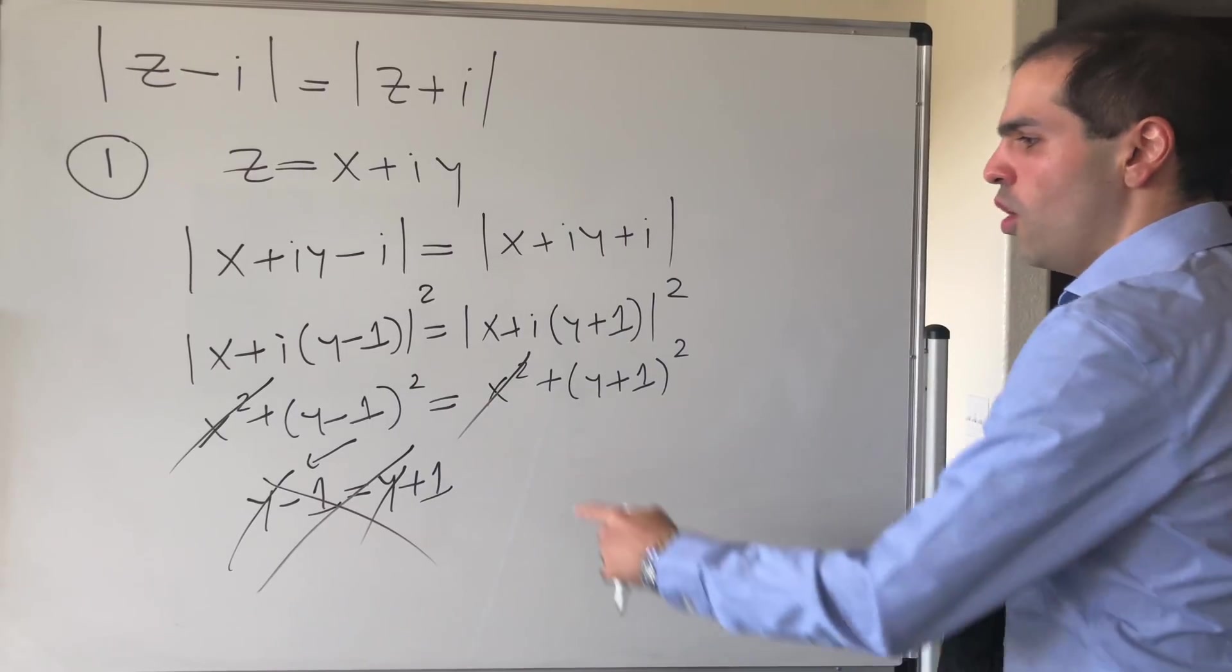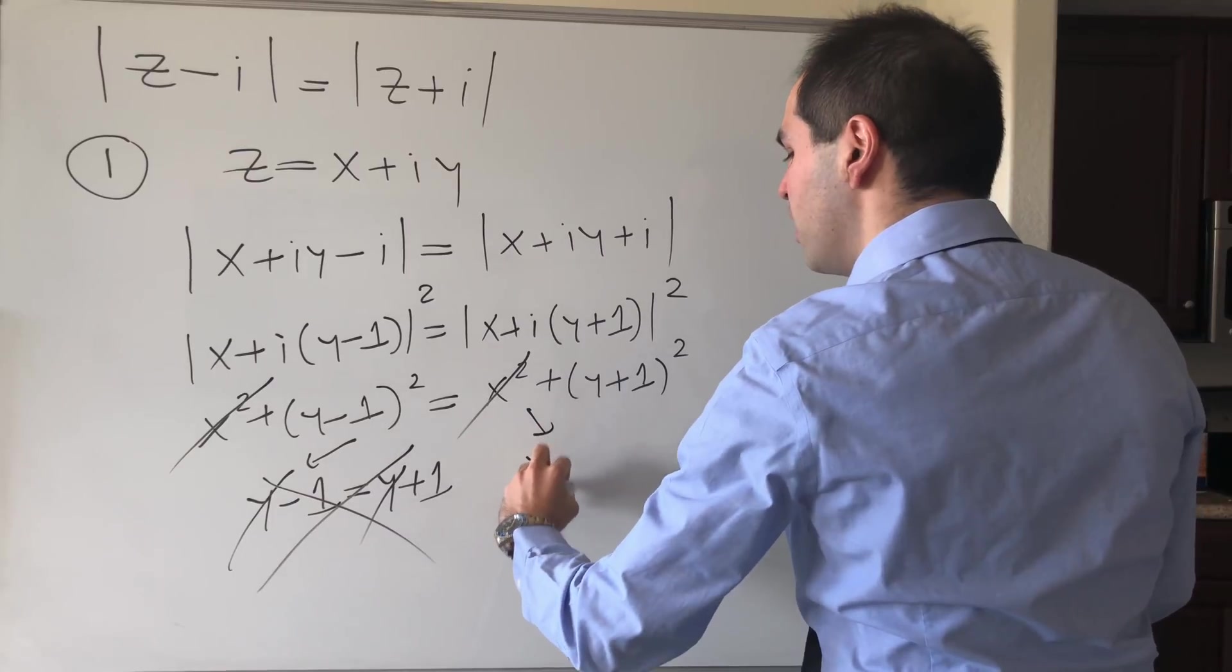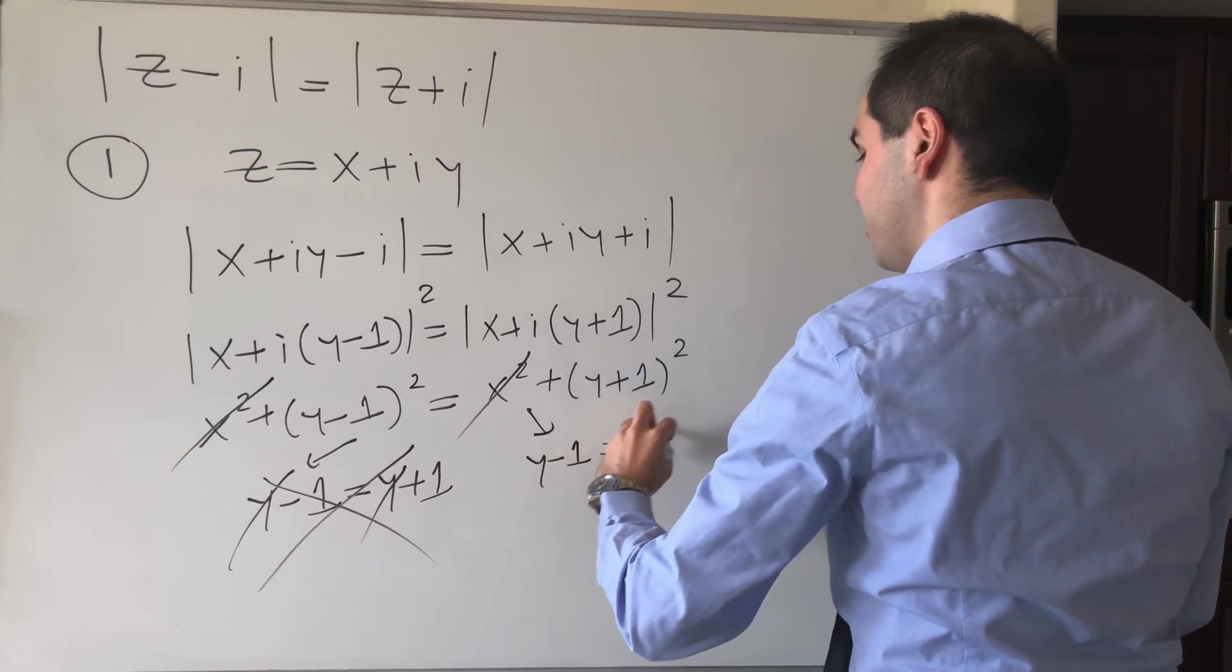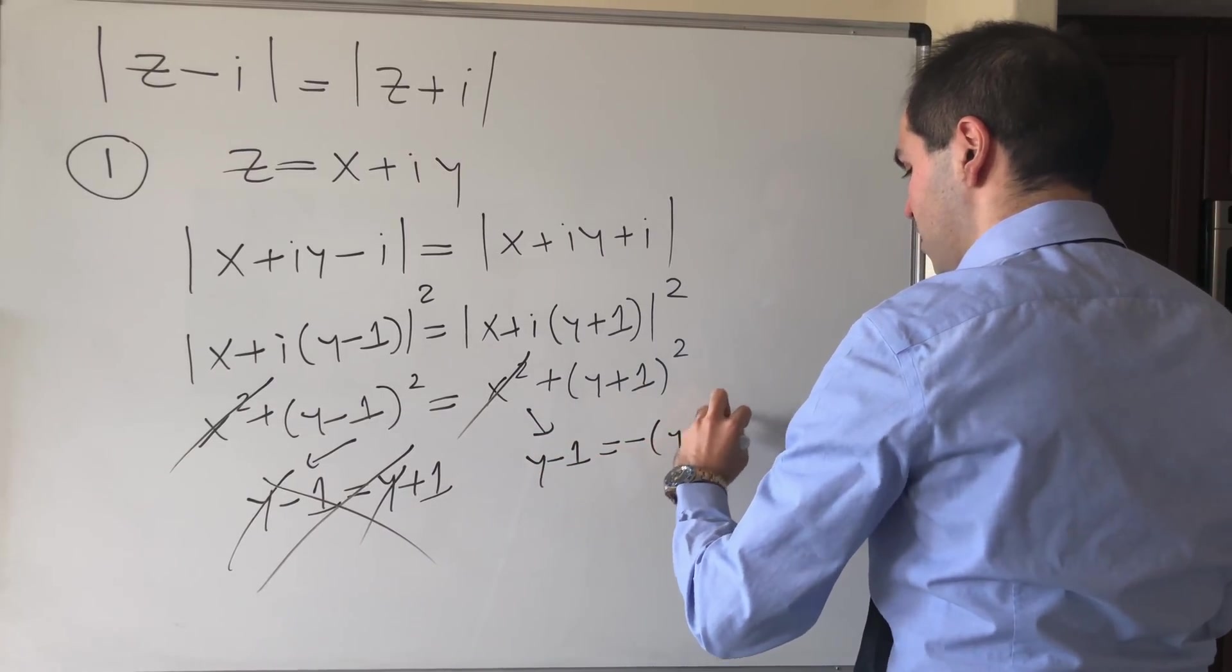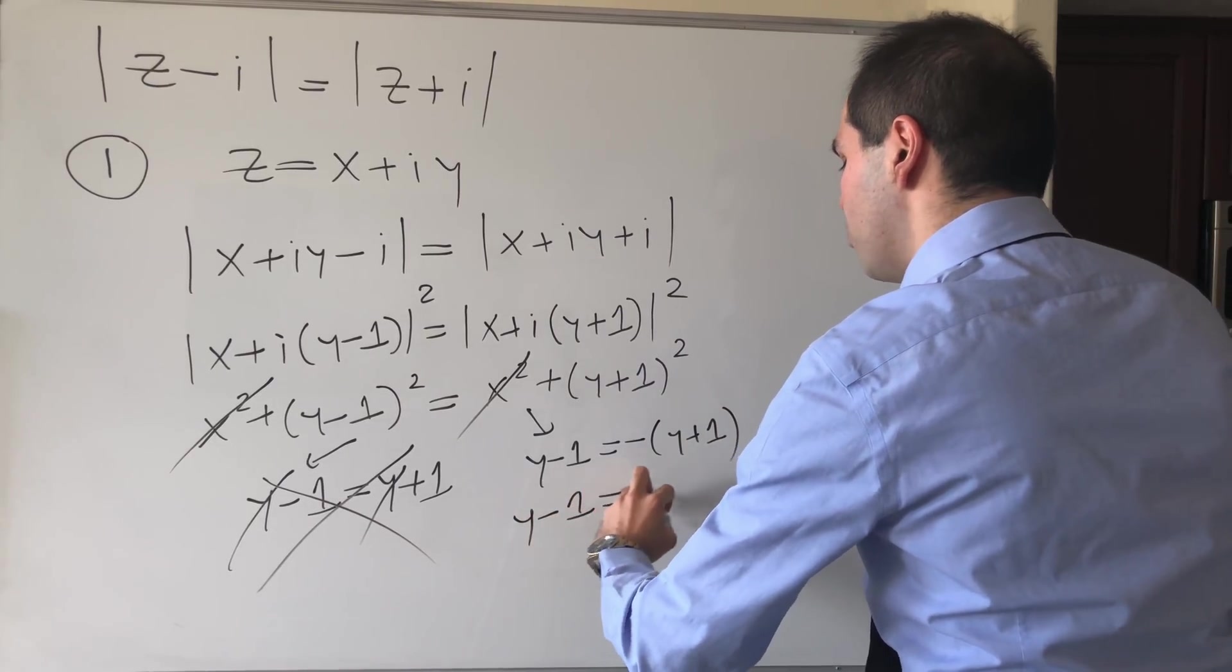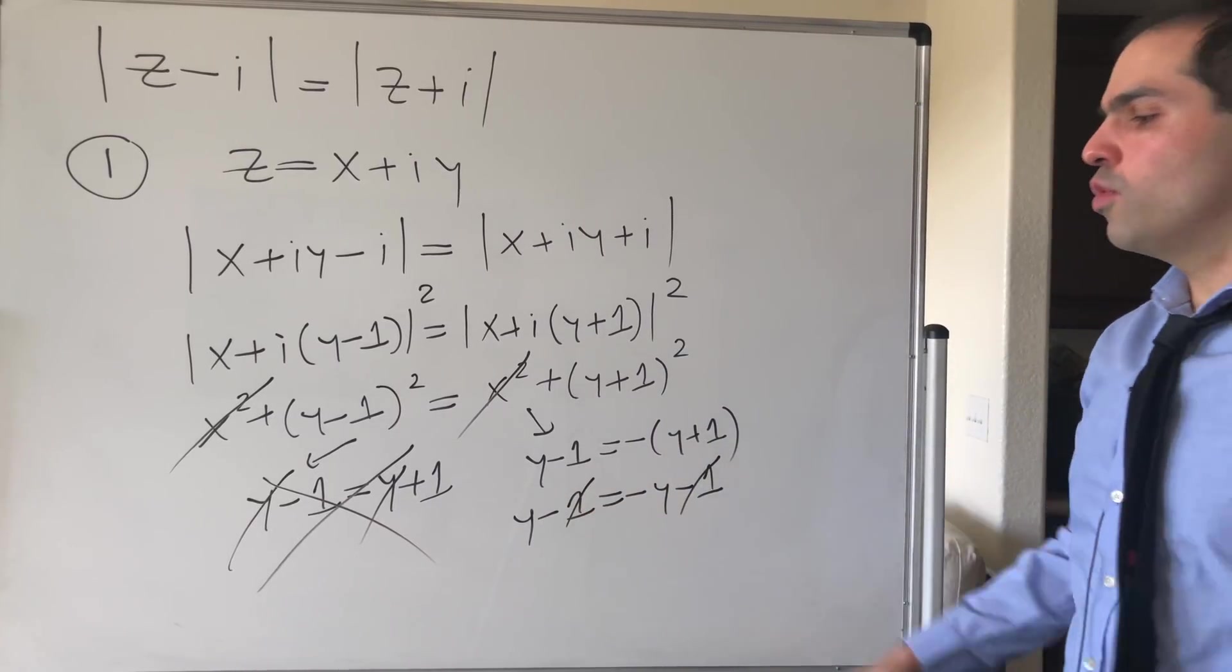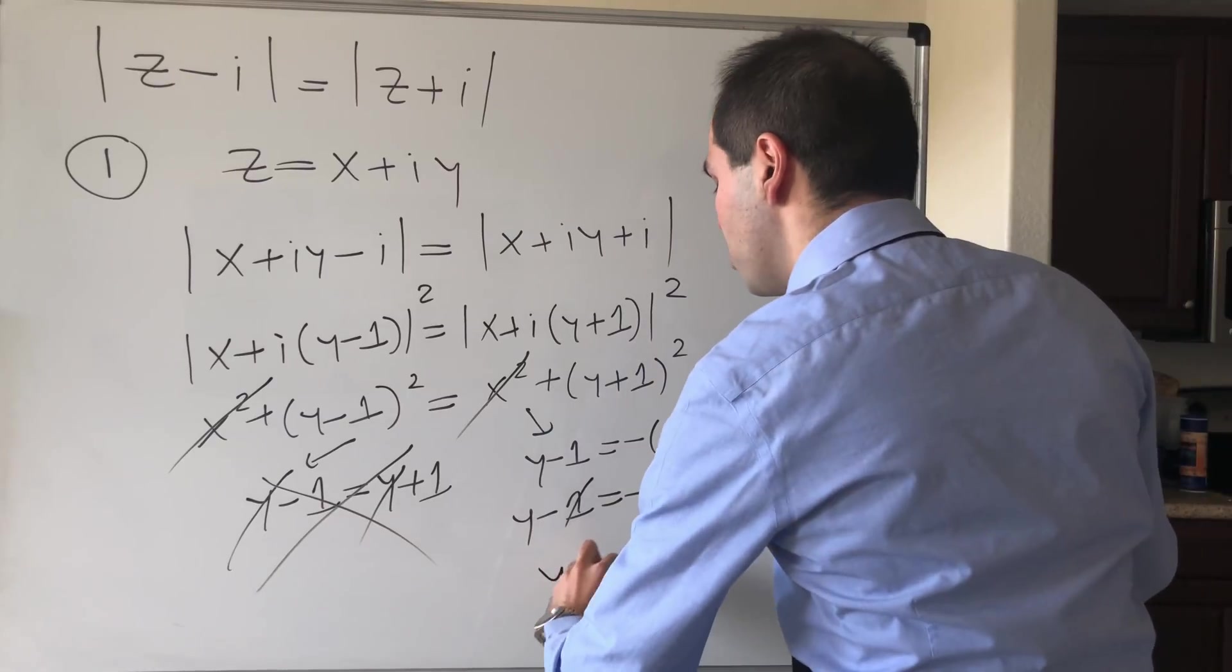So this doesn't work, or the other possibility is that y minus 1 is minus y plus 1. And then what do we get? We get y minus 1 equals minus y minus 1. This cancels out. So y equals minus y, so y equals 0.